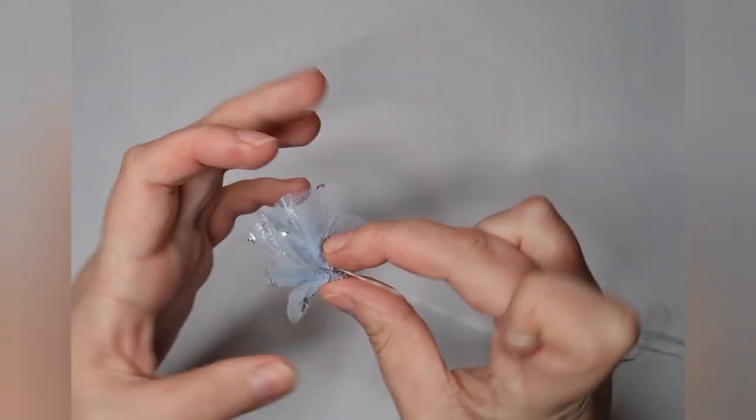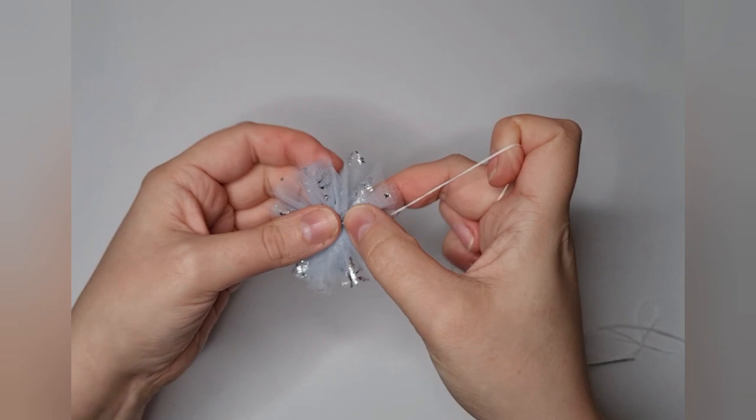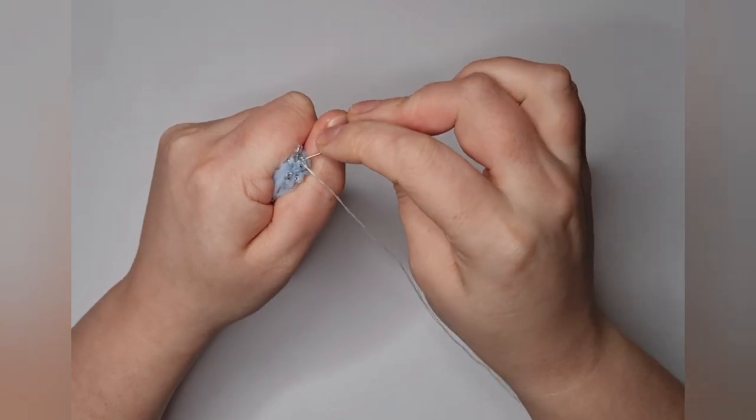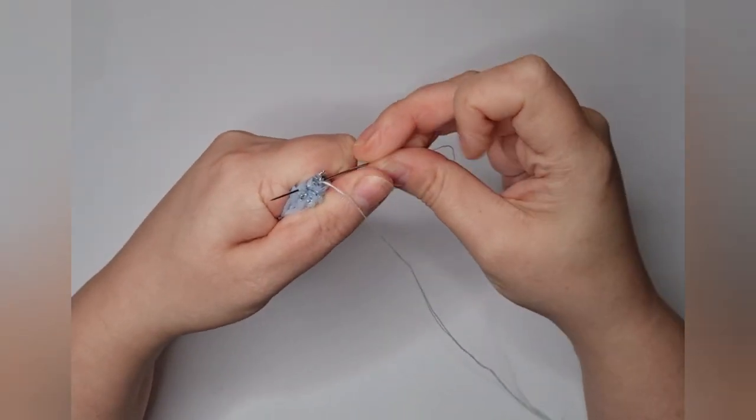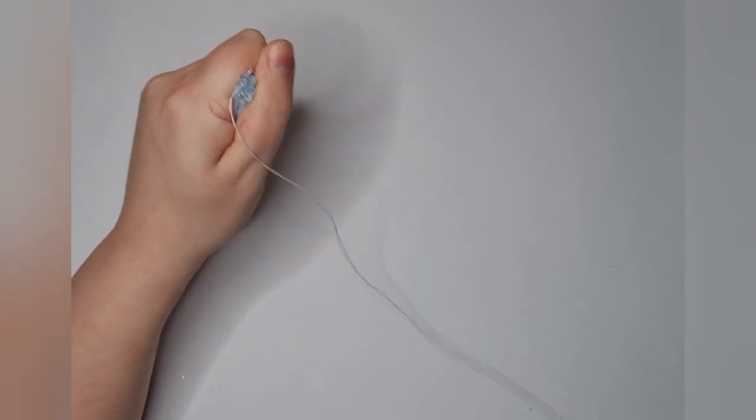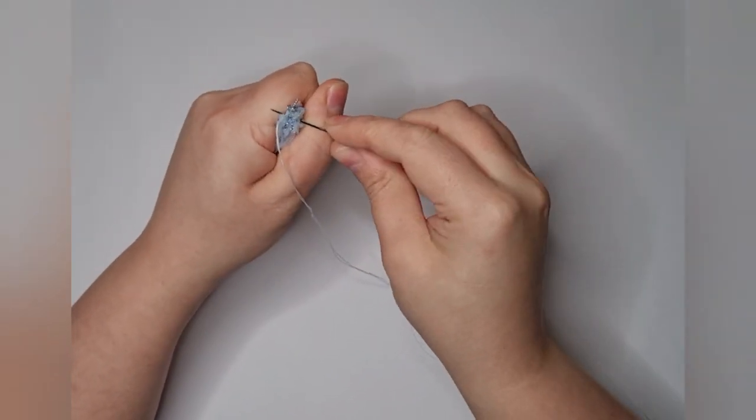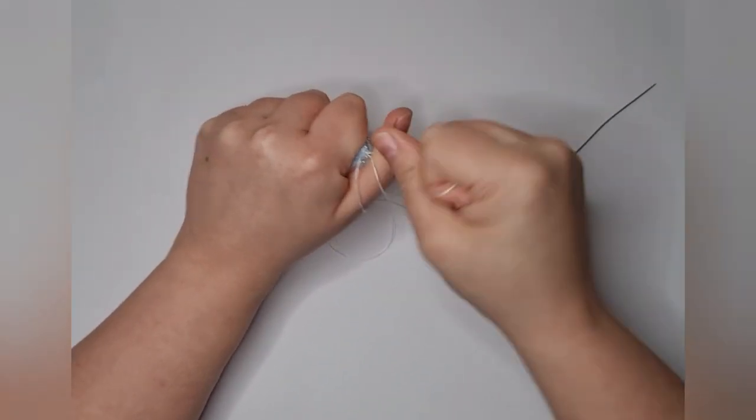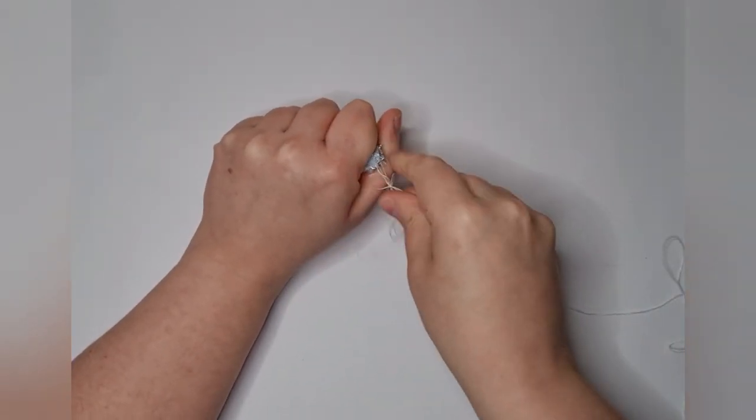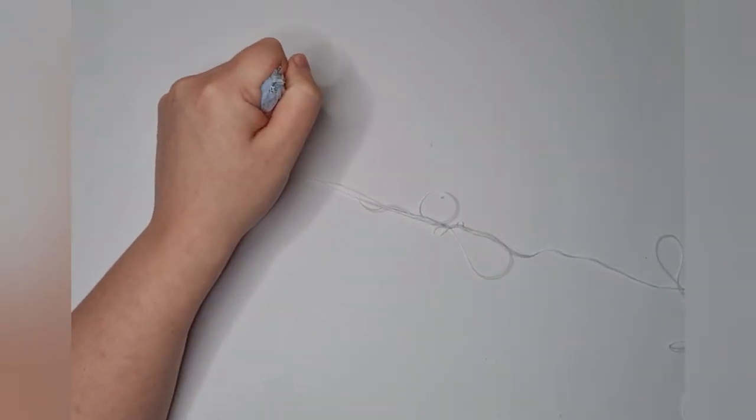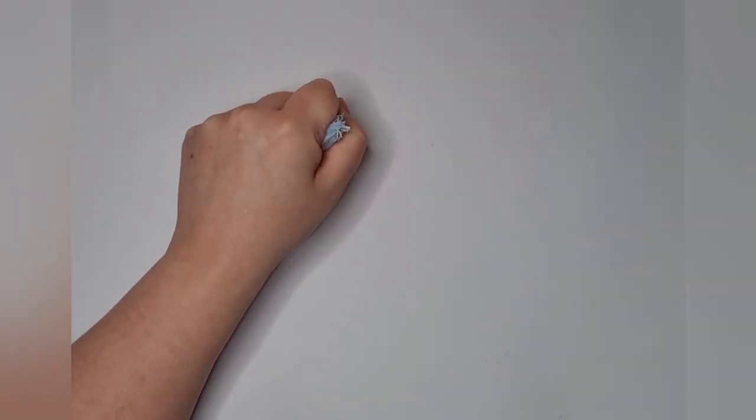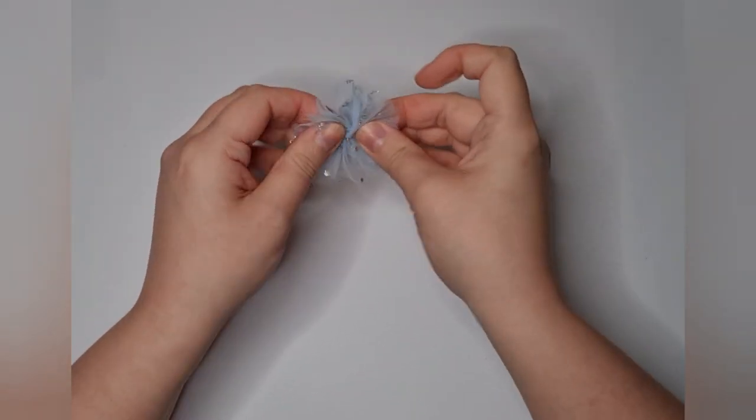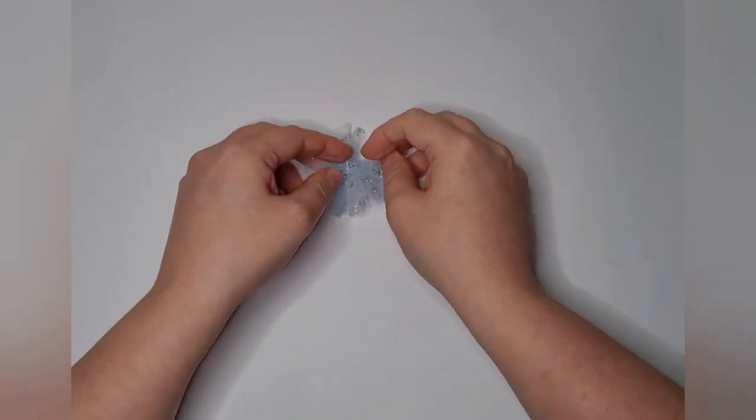And this bit where we can see the knot is going to be the back where we attach our felt circle. And the other thing I do is I put just a couple of stitches through the base. There we go, just so I can be extra certain that that is nice and tight.